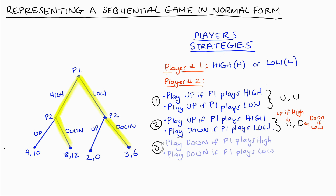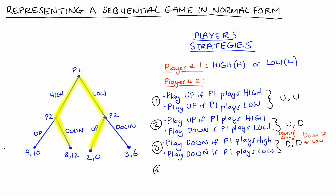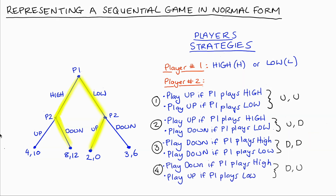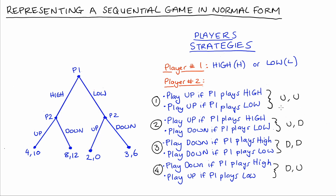Another possible strategy would be Player 2 playing down if Player 1 plays high, and down if Player 1 plays low. I'll notate this strategy as DD. Lastly, Player 2 could adopt the strategy of playing down if Player 1 plays high, and up if Player 1 plays low — I'll notate this as DU. So these are the four strategies of Player 2: UU, UD, DD, and DU. And Player 1 has those two strategies: high and low.